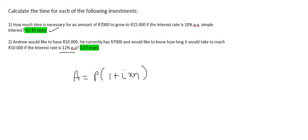We know that Andrew would like to have 10,000 Rand, so that's going to be the final amount. The starting amount is 7,000. The interest rate is 12%, or 0.12, times by N.